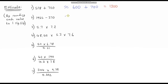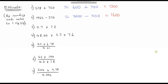The next one: it's going to be approximately equal to this rounding up to 2,000, and then we're subtracting this which rounds up to 400. So 2,000 subtract 400 gives us 1,600.